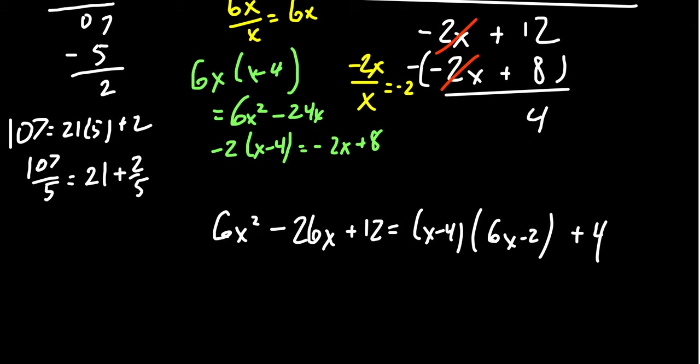Our goal, whenever we have these polynomials, is we're going to write f(x), the numerator, as our divisor, g(x), times q(x), the quotient, plus r(x), the remainder. This is our goal.